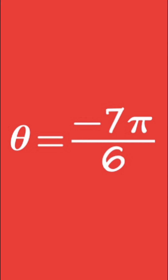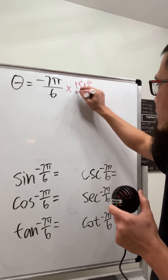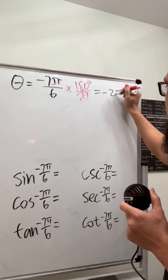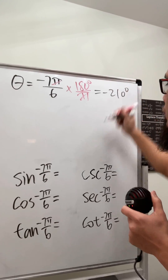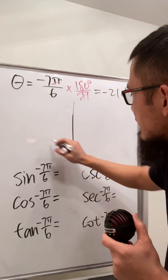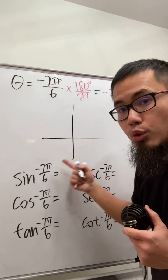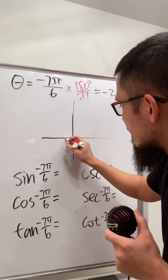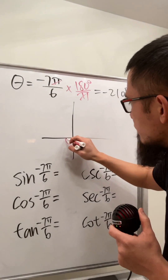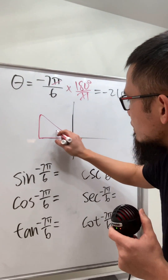The angle is -7π/6. Let's multiply by 180 degrees over π — this is the same as negative 210 degrees. We'll use the reference triangle method, but since the angle is negative we go clockwise. From here to here is 180 degrees already, but we need 30 more.